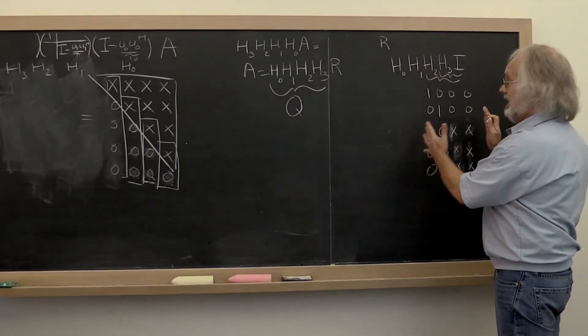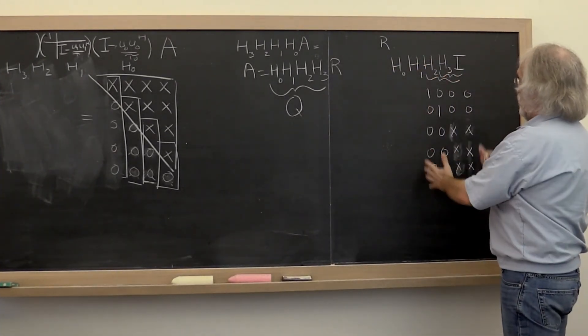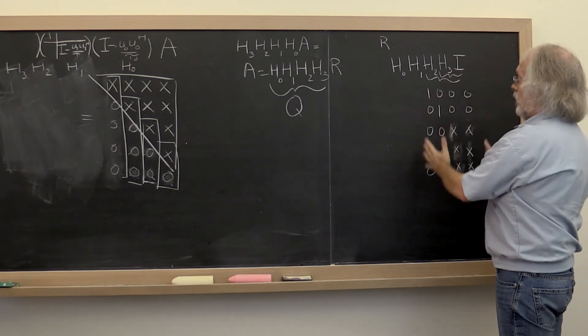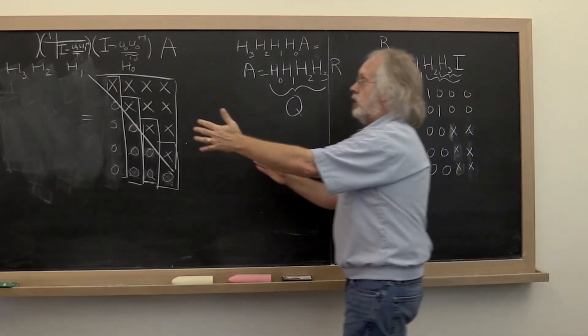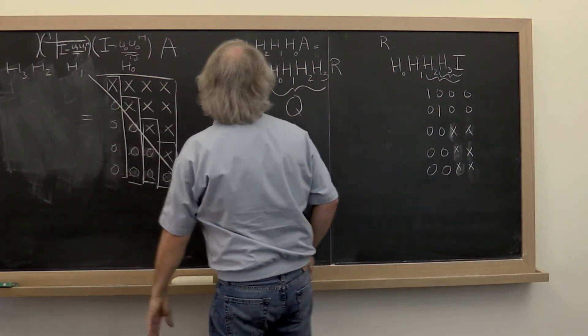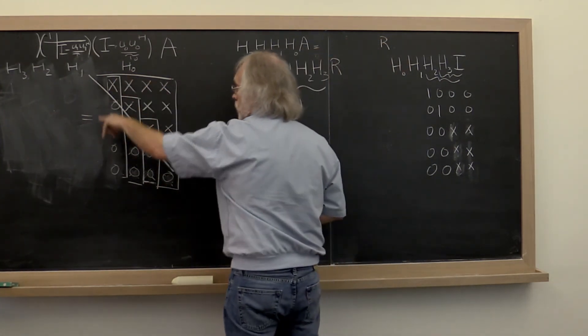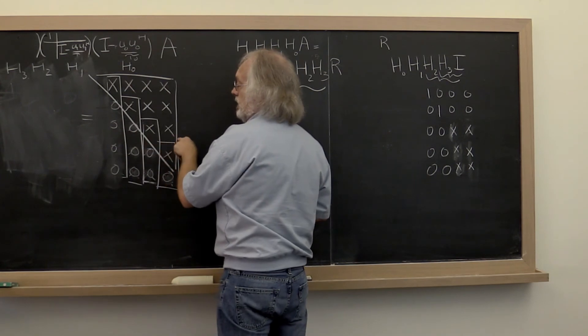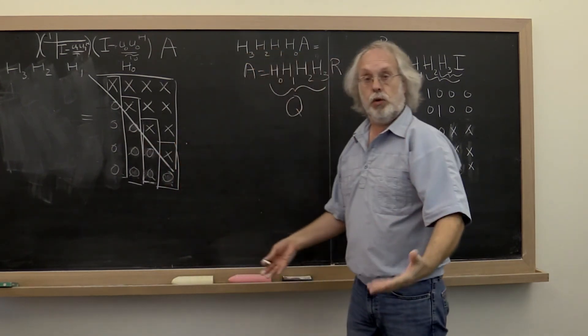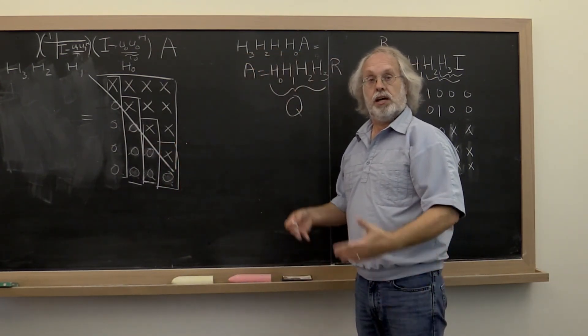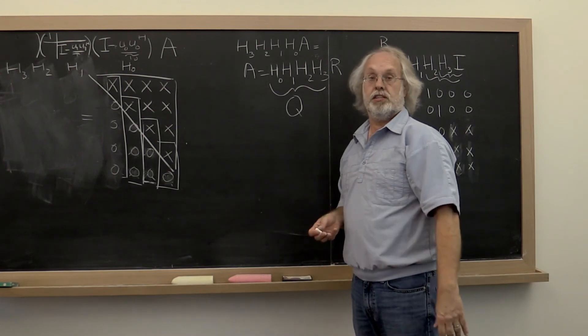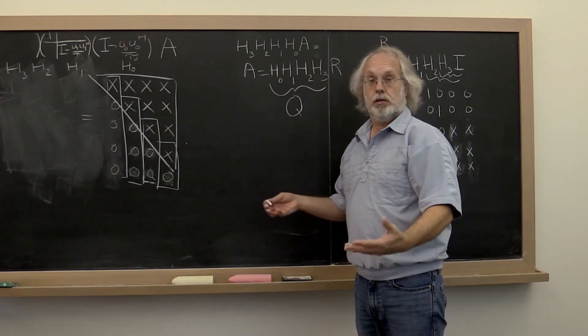So what this then gives us, if we only work with as many columns here as we have columns in the original matrix, is actually the Q that you can then pair with this upper triangular matrix right here to get the same QR factorization that, say, the Gram-Schmidt orthogonalization process computed.